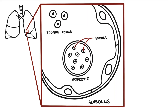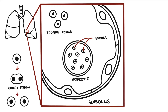These stages all exist within the alveoli. The trophic forms can replicate through binary fission into two near-identical trophic forms, and this is called asexual reproduction.